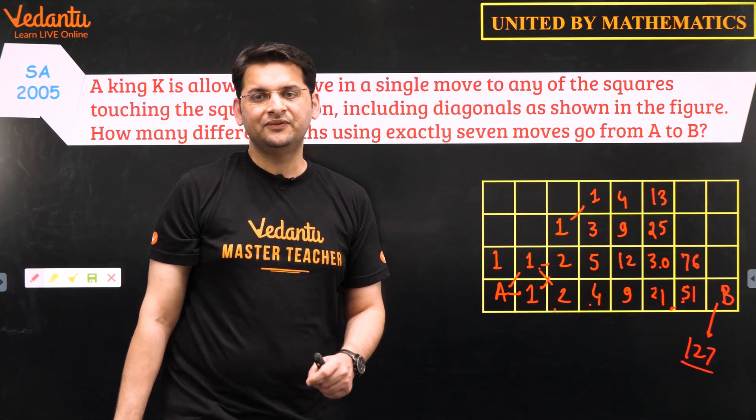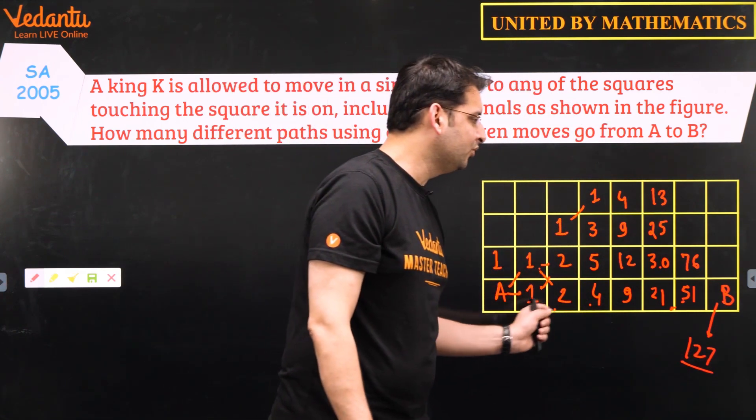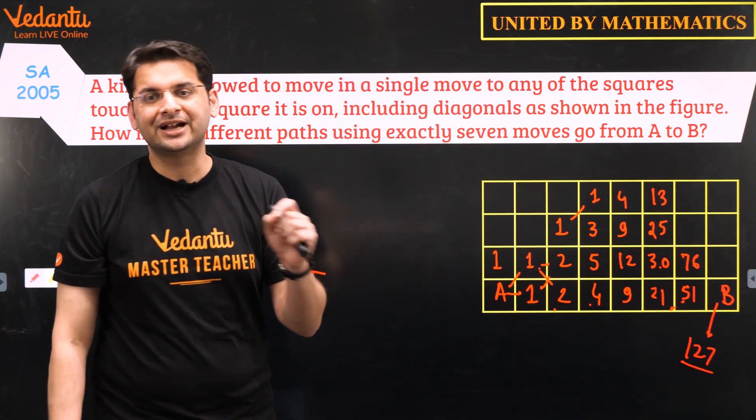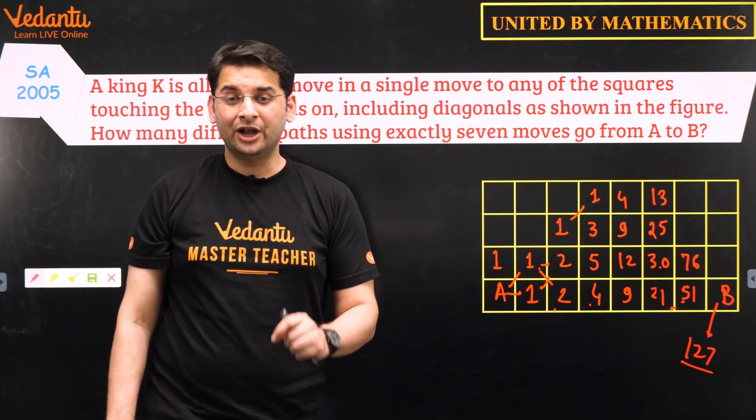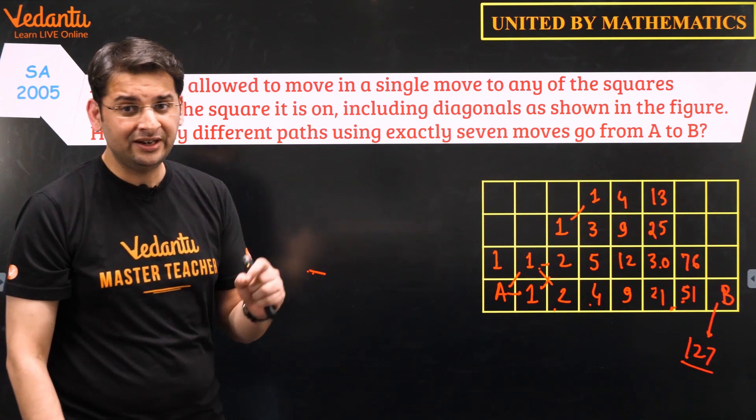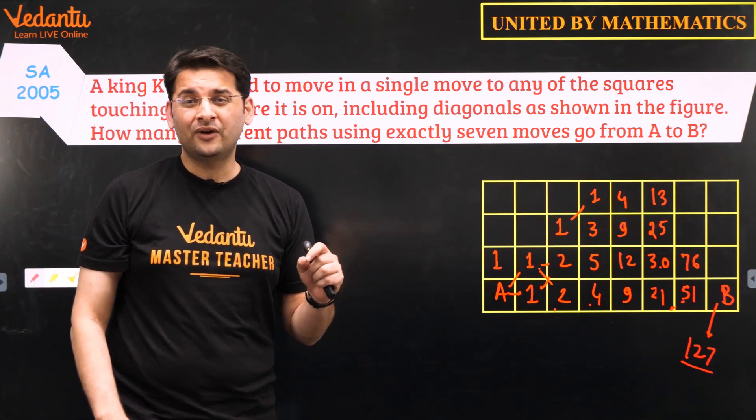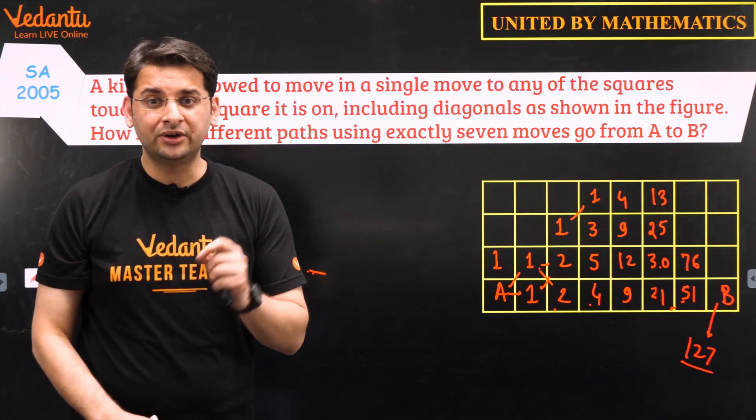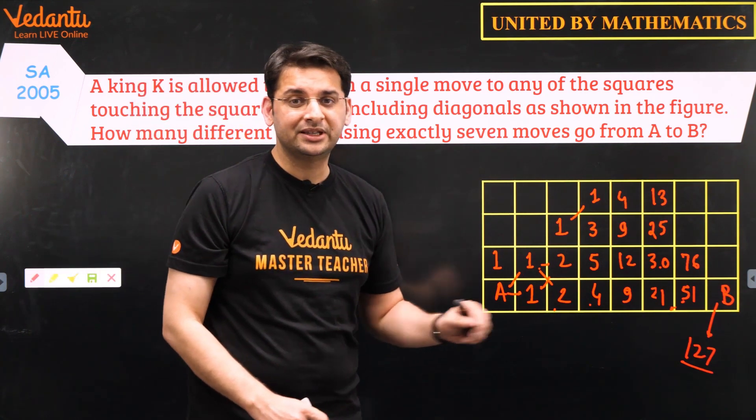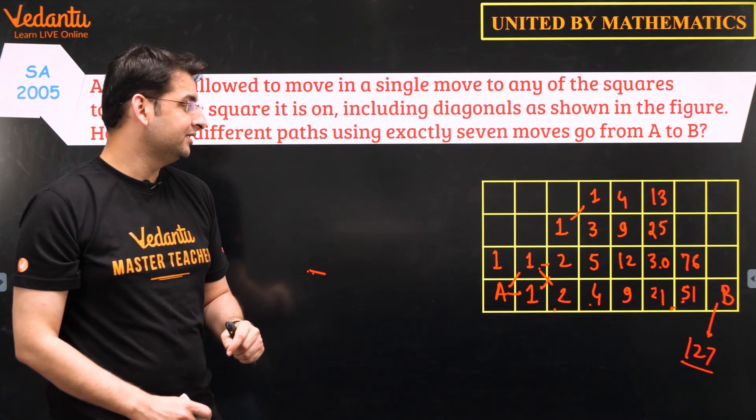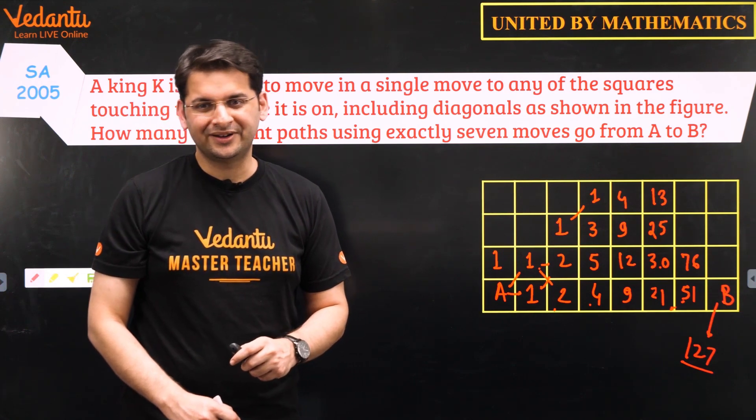So there are total of 127 ways in which a king can move from A to B in exactly 7 moves. I hope you've liked this approach. This was different. And the counting, of course we could do this question using counting as well. There are other ways of counting but this was the method which seems to be the most elegant one. Alright, take care.